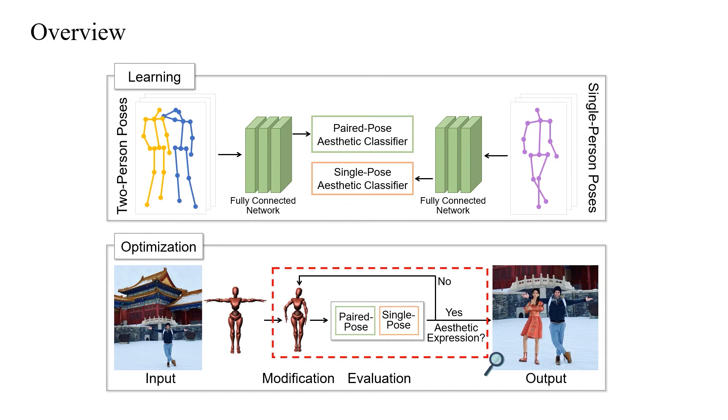In the optimization stage, the optimizer modifies the virtual character's pose and evaluates the corresponding results iteratively, such that it matches the posed user. An MCMC sampler is used to explore the solution space.